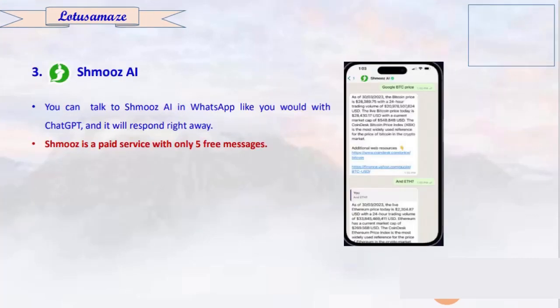The next one is Smoose AI. The purpose of Smoose AI is the same — you can have conversations and also generate images using it. Again, Smoose AI has a limitation: only 5 messages are free, and after that you pay.